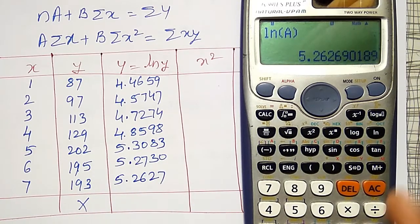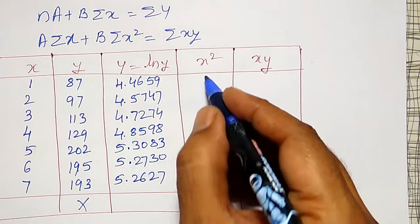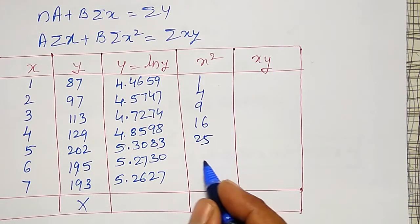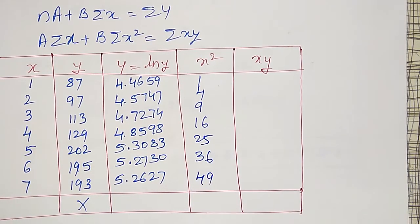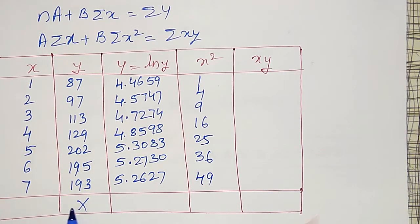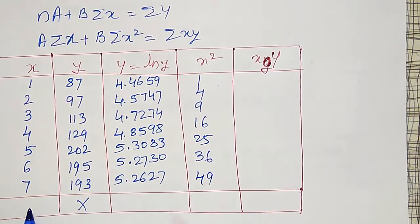I am taking ln in the calculator because it is to the base e. If you are using log to base 10, then you would choose log. For y equal to 193, capital Y equal to 5.2627. Now the x² column: 1, 4, 9, 16, 25, 36 and 49. And the x times capital Y column I will also prepare.